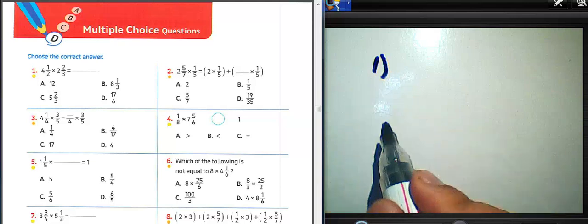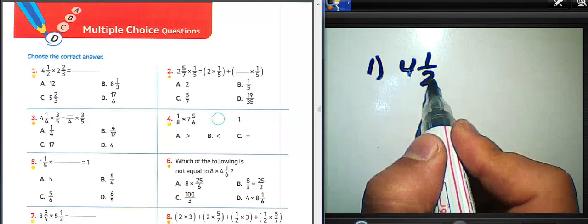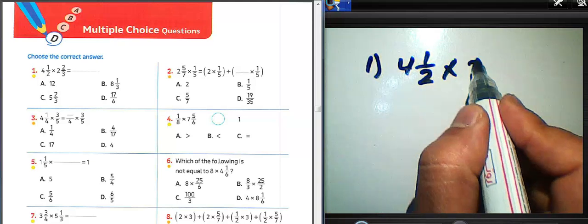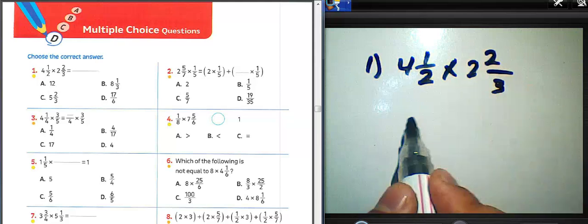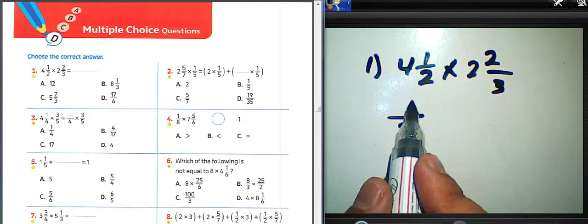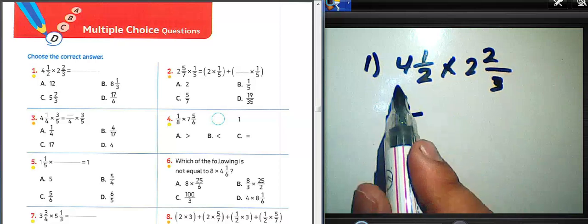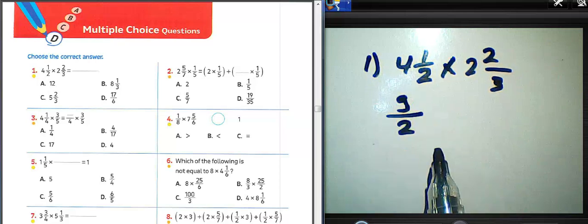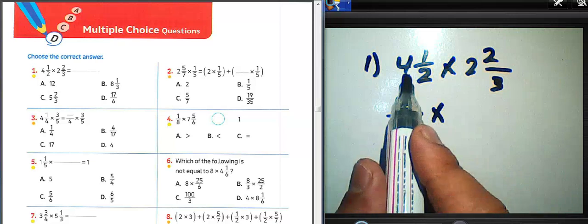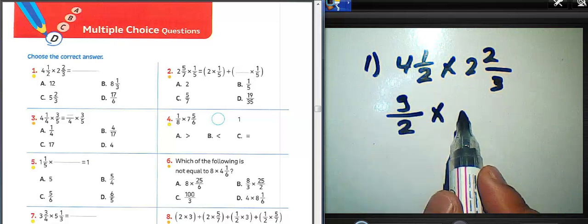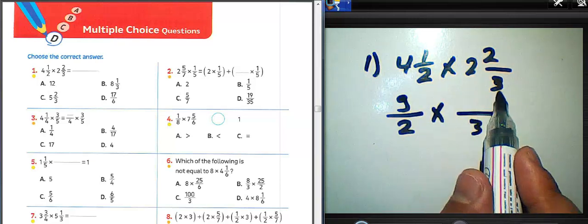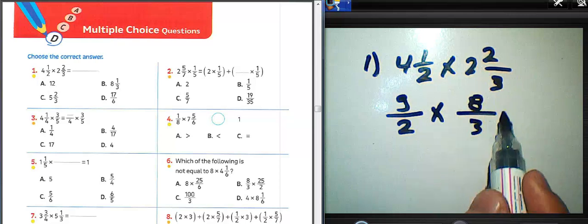My students, how are you today? I will solve all questions from the master book. Question number one: four and one over two, multiply by two and two over three. We can write two in the operator: two times four equals eight, plus one equals nine. We can convert from mixed number to improper fraction here. Write three in the operator: two times three equals six, six plus two equals eight.